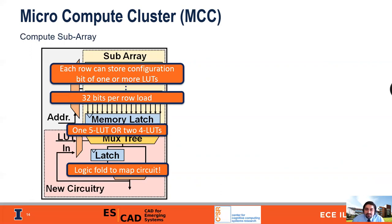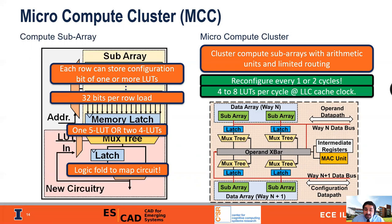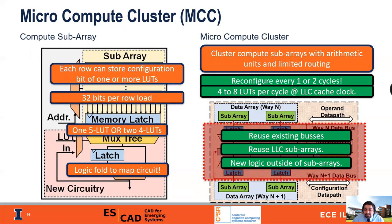One or two lookup tables are probably not enough, so we group multiple compute sub-arrays with some arithmetic units and limited routing into what we call a micro-compute cluster. Since we can read every row from the sub-array every one or two cycles, we can reconfigure and create a new lookup table every one or two cycles. Each micro-compute cluster can provide 4 to 8 lookup tables per cycle at cache clock speeds. Crucially, we reuse the existing buses in the LLC and the existing sub-arrays. All of the new logic is placed outside the sub-arrays, minimizing our impact to the LLC performance and not requiring redesigning the sub-arrays.